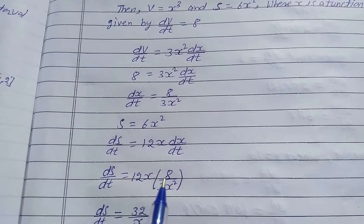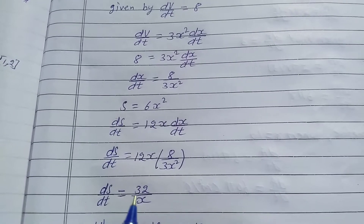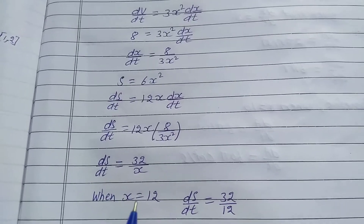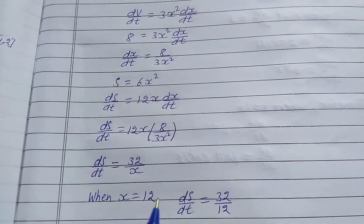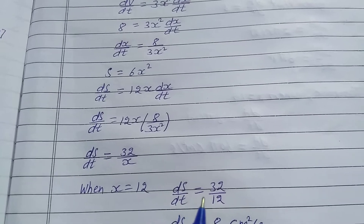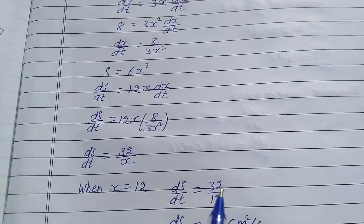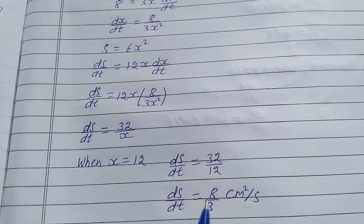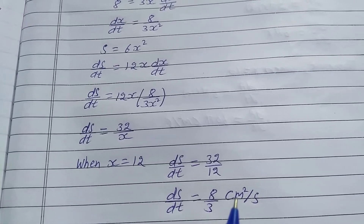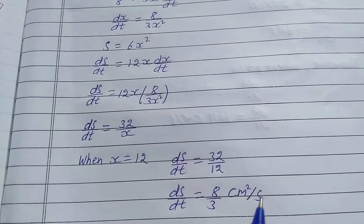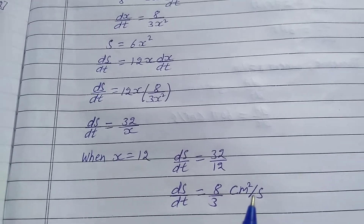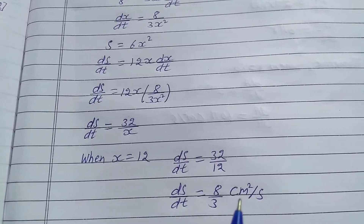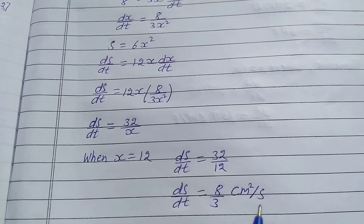The x terms cancel and 3 divides into 12 giving 4, so dS/dt is equal to 32 upon x. When x is equal to 12, dS/dt is equal to 32 upon 12, so dS/dt is equal to 8 by 3 cm² per second. This means the surface area is increasing at the rate of 8/3 cm² per second when the edge is 12 cm. That is the solution.